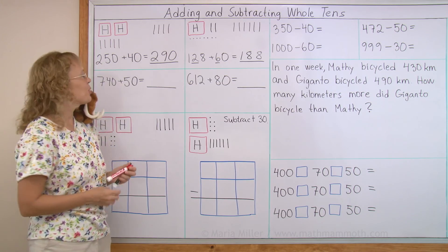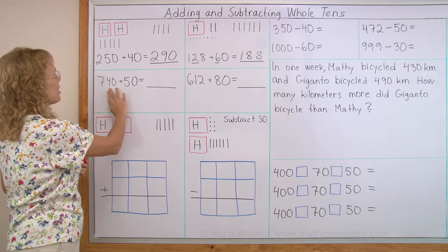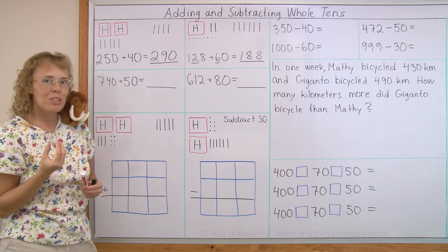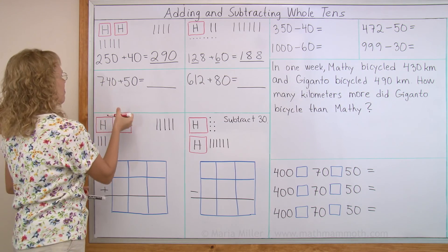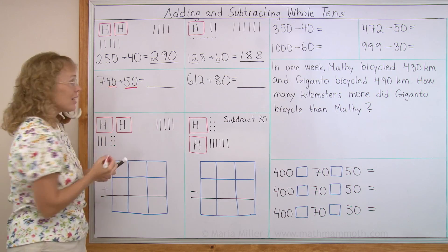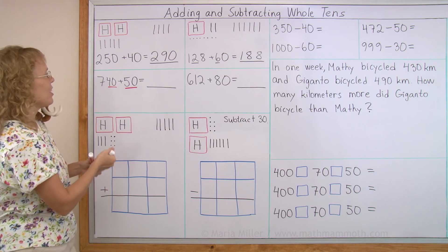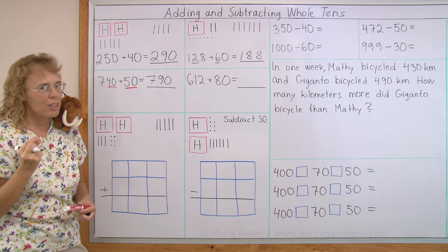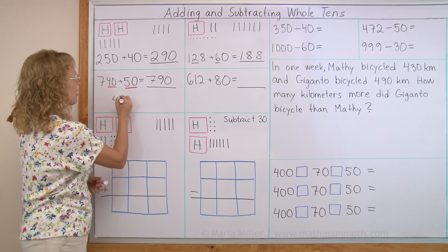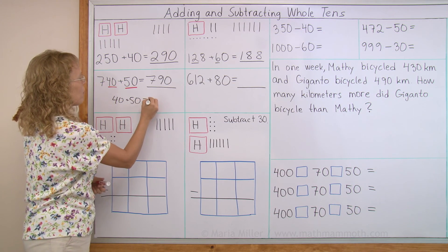Let's try it without pictures too. 740 plus 50. Notice those whole tens. 40 and 50, right? And so we get 90. And then we have the 700. So just 790. Your helping problem, can you see what that is? It's of course the 40 plus 50. That's your helping problem here.